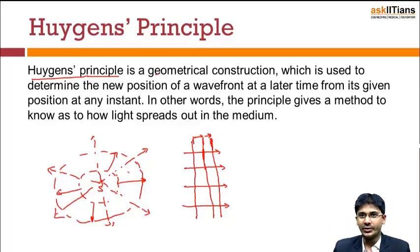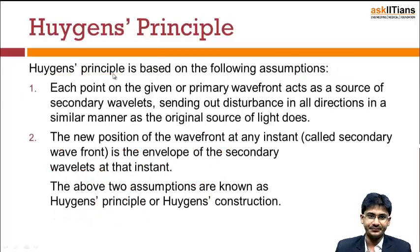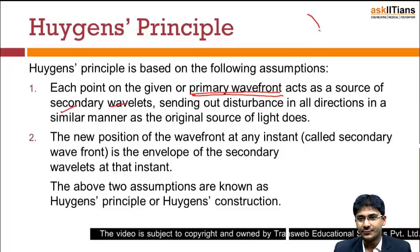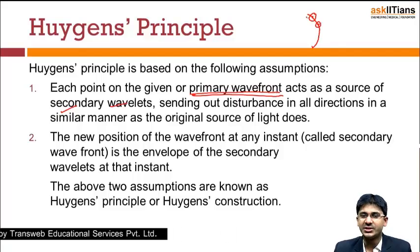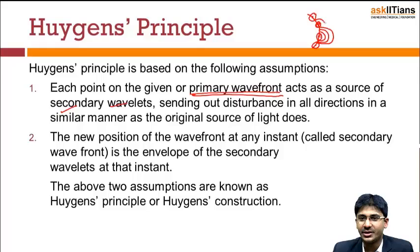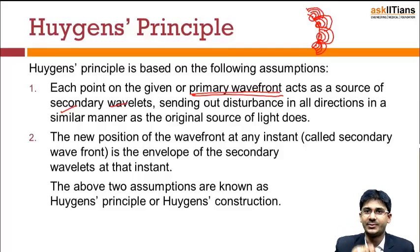Huygens' Principle is based on two assumptions. The first assumption is that each point on the given or primary wavefront — the initial one, from where the waves originate — acts as the source of secondary wavelets. There are infinite number of points on the wavefront. From each point, waves originate in all directions, acting as a point source. So waves are originating like this from each point.